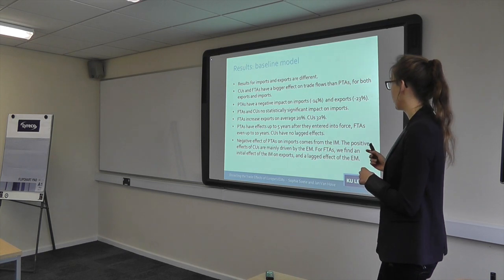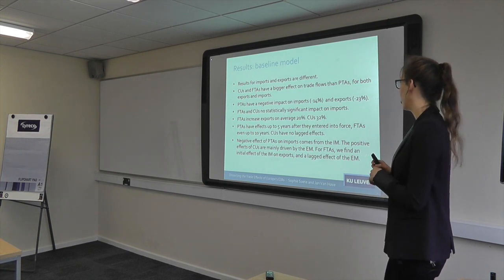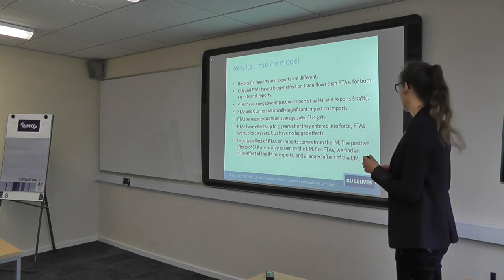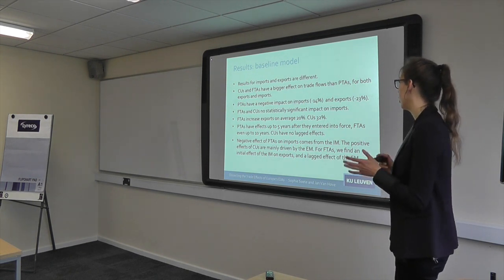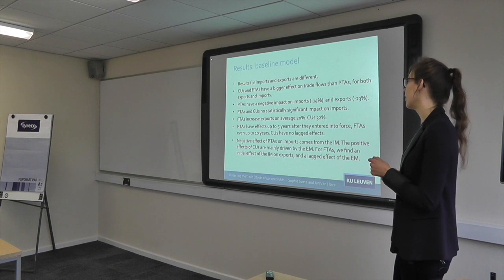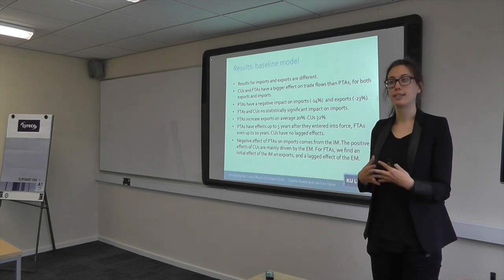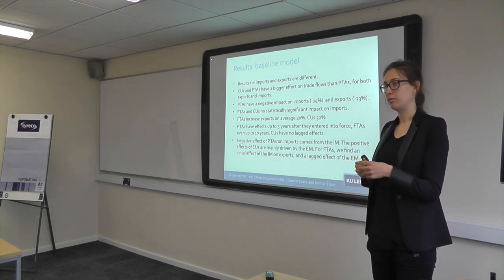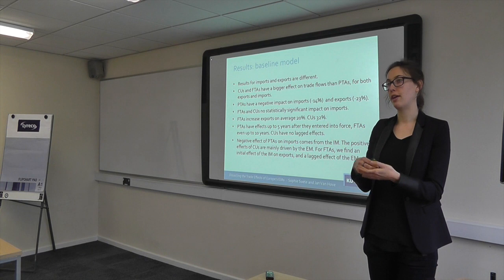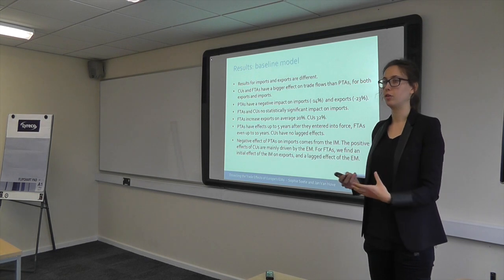Looking at the margins, the negative effects of preferential trade agreements come from the intensive margin — the average value per product. The positive effects of customs unions are mainly driven by the extensive margin. For FTAs, we find an initial effect on the intensive margin and then a lag effect on the extensive margin — a finding already seen in the literature — probably because it's easier to first increase volume traded and then later start exporting new products.